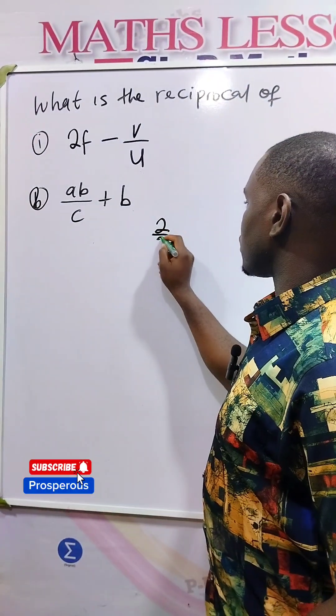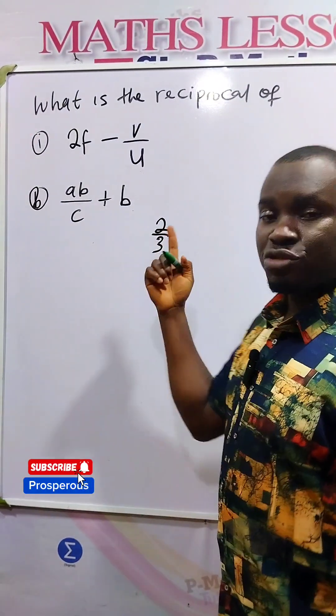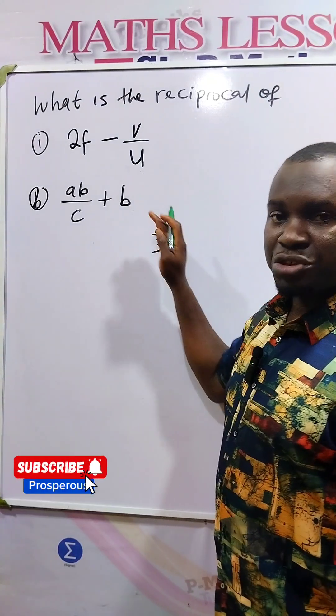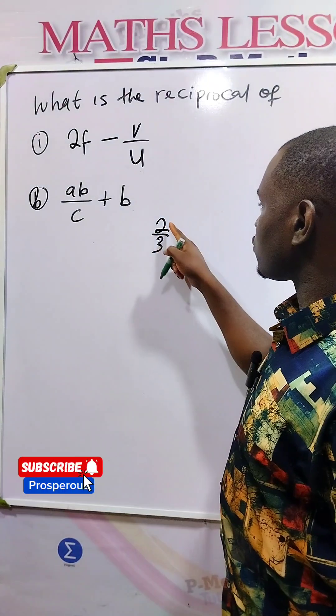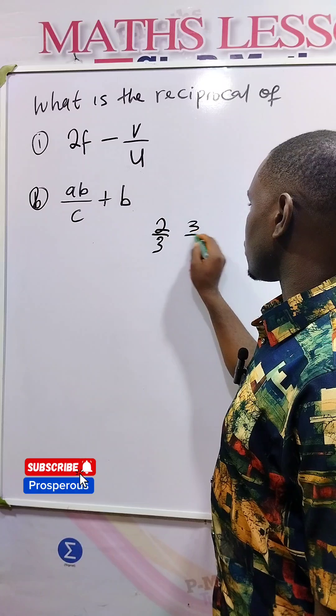If you have 2 over 3, a fraction, the reciprocal is flipping the numerator and the denominator. So the reciprocal of 2 over 3 gives us 3 over 2.